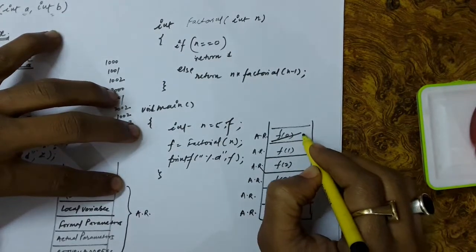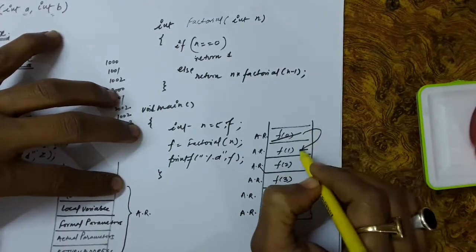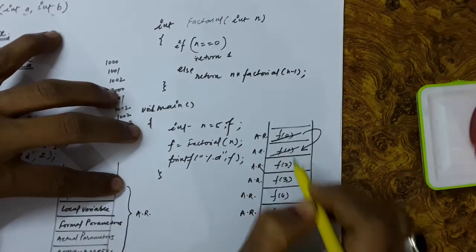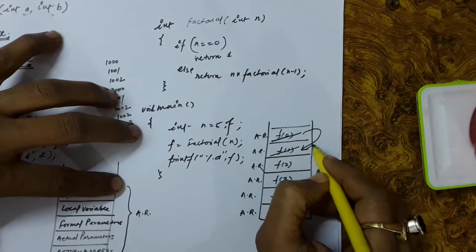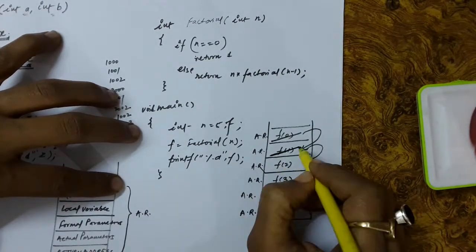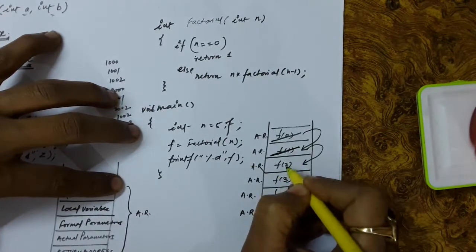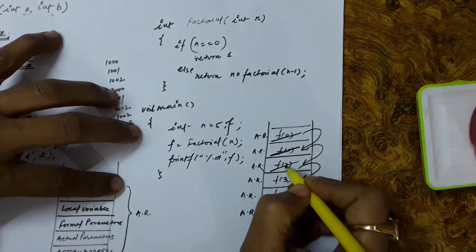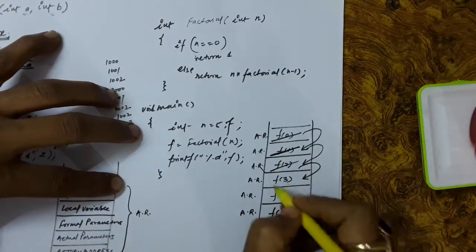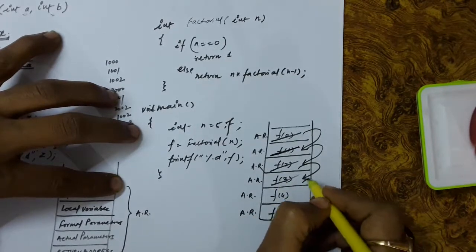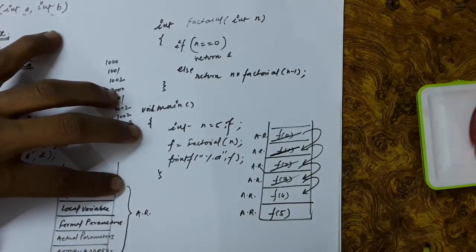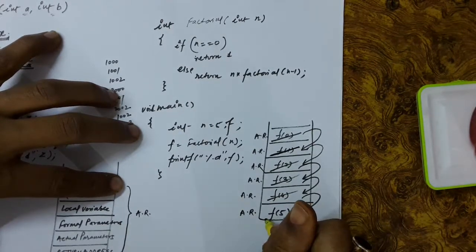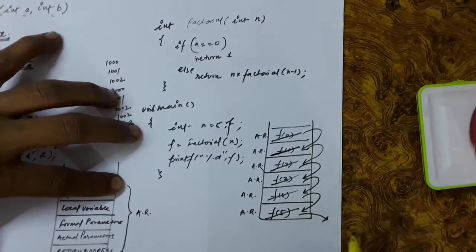There is no requirement of factorial 0's activation record now, because this function is complete — factorial 0 will return value 1. But where to return this value? Obviously, factorial 0 was called from somewhere in factorial 1, so it will return value 1 there. Once we know the value of factorial 1, this is resolved, so we will pop this one. Factorial 1 was called from factorial 2, so that value will be returned to factorial 2, and this activation record is popped. Similarly, factorial 2's activation record is popped and value returned to 3, then factorial 3 to 4, then factorial 4 to 5. When factorial 5's value is known, this activation record is also popped, and the control will shift to the main.